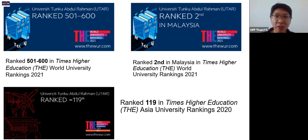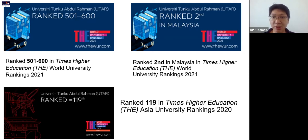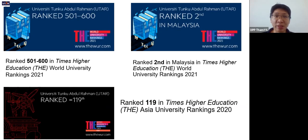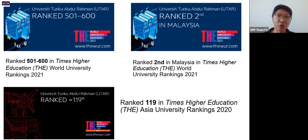UTAR's ranking earned through Times Higher Education for 2021 places us at 501 to 600 in the world university ranking. In other words, we are the second best university in Malaysia, and in Asia we are ranked 119. This is quite an honor because UTAR is a young university, less than 20 years old, yet we have achieved such a high ranking within that time.